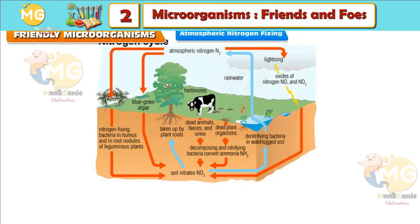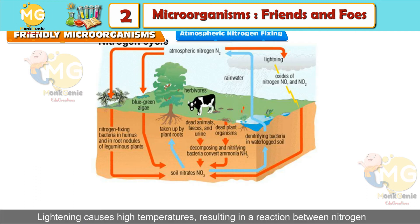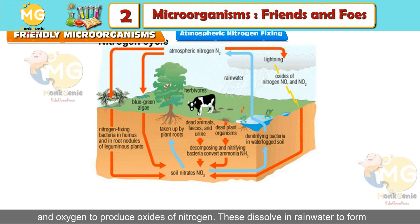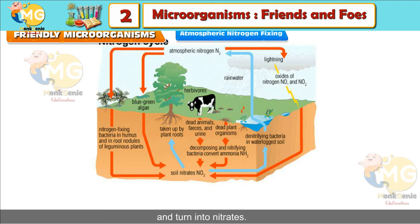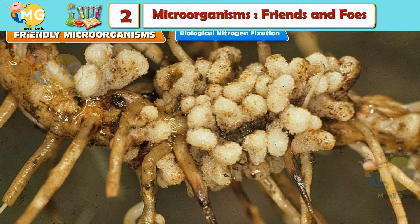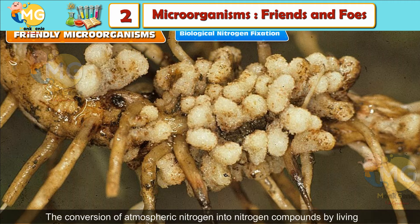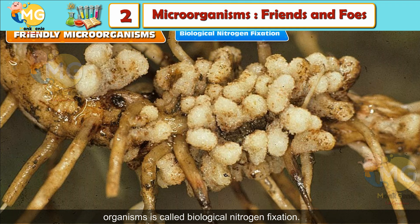Atmospheric nitrogen fixation: Lightning causes high temperatures, resulting in a reaction between nitrogen and oxygen to produce oxides of nitrogen. These dissolve in rainwater to form dilute nitric acid, which reacts with the alkalis in the soil, such as limestone, and turns into nitrates. Biological nitrogen fixation: The conversion of atmospheric nitrogen into nitrogen compounds by living organisms is called biological nitrogen fixation.